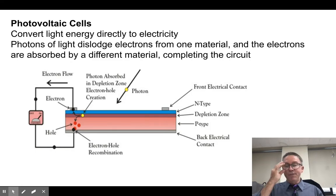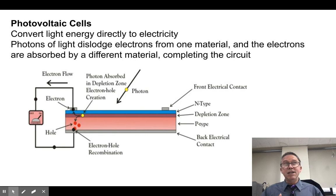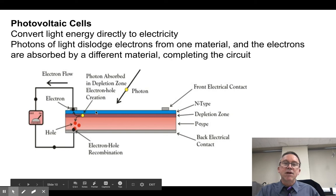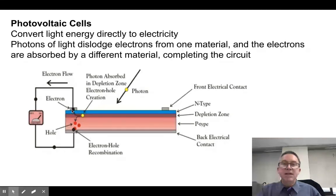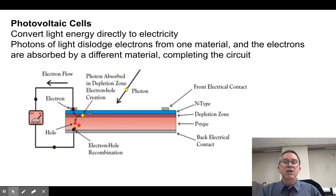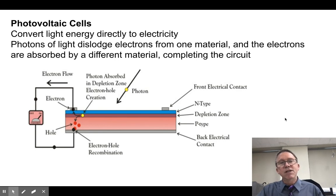Then there are photovoltaic cells — this is usually what people think of when they think of solar energy. A photovoltaic cell takes advantage of a certain aspect of quantum physics where a photon of light — just energy from the sun — hits a metal and causes an electron to move. The electrons move off this surface, go through a circuit, and come back on the other side. There are two different metals, and a pathway is established where photons of light dislodge electrons and force them through a circuit. It's a direct conversion of light energy into electrical energy with no steam generator needed, which is good — though there are a few difficulties.